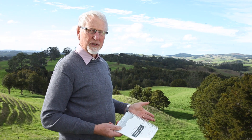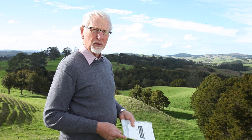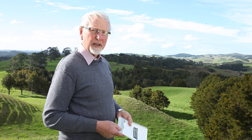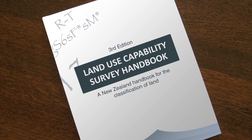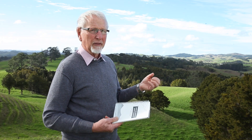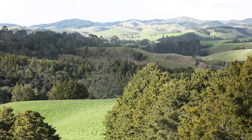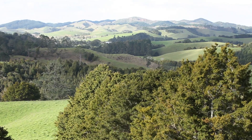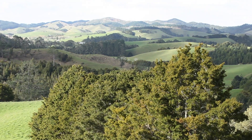What we're wanting to talk about today is a tool that we use for assessing the suitability of land for sustainable land use: the land use capability system. It was developed initially in the United States and then adapted to suit New Zealand conditions. It's not a way of telling you how to use land — all it does is simply assess its suitability for sustainable use.